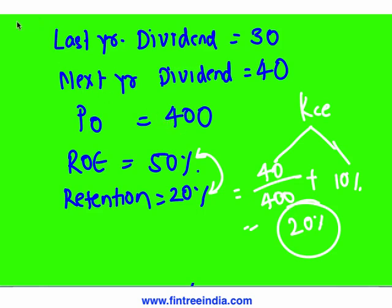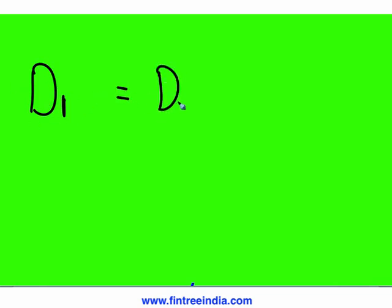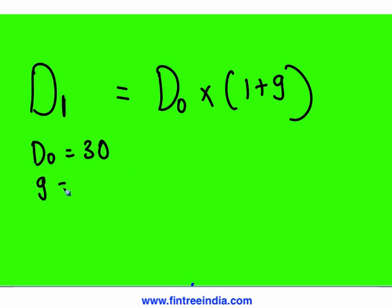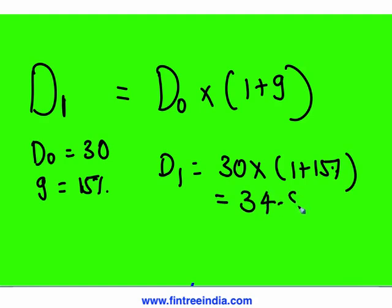So 10 percent plus 10 percent gives a cost of equity of 20 percent. Now, D1 is always calculated as D0 times (1 plus growth rate). For example, if D0 is 30 and growth rate is 15 percent, then D1 equals 30 times 1.15, which equals 34.5.